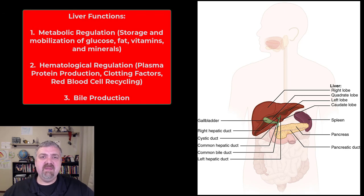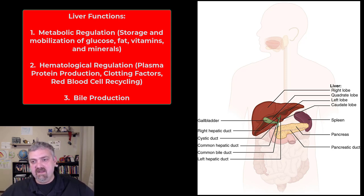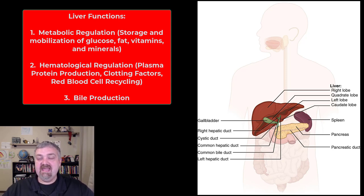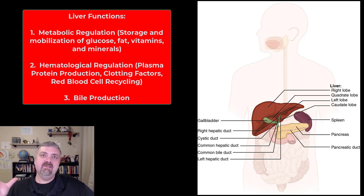Let's talk about the big picture of its functions, and then we'll look at the blood supply and those types of things. The three main categories of functions the liver has are metabolic regulation, hematological regulation, and then the production of bile, which is the easiest one.